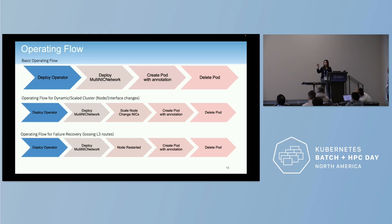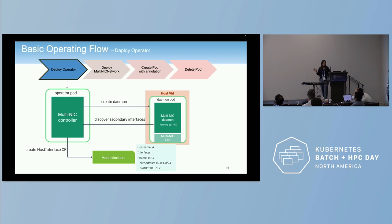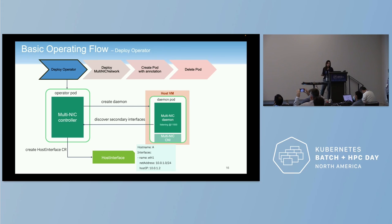Additional triggers occur when users scale the node, increase the number of nodes, or change an interface — that triggers a synchronization change. If the node restarts or fails, it triggers another synchronization. When you deploy the operator, it automatically creates a daemon deployed at the host with the CNIs, and automatically discovers the host interfaces — listing secondary interfaces, device IDs, etc. — in the host interface custom resource.